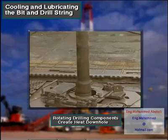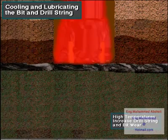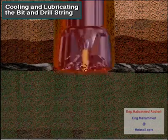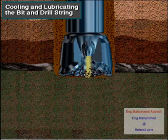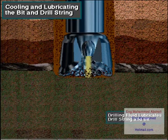Heat is encountered downhole. Deep formations can be very hot, and friction from rotating drilling components generates a lot of heat. High temperatures increase drill string and bit wear. Drilling fluid helps to reduce the temperature in the drill string downhole while drilling. In addition, drilling fluid provides lubrication to the drill string and bit that also helps prevent wear.